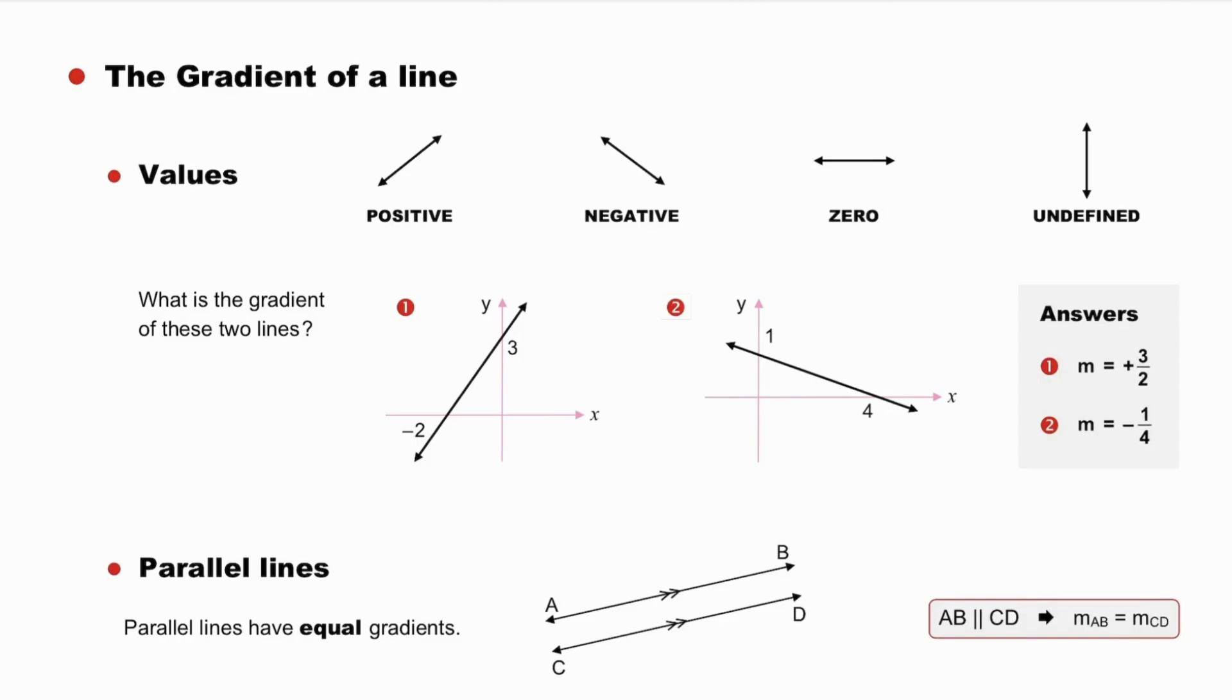Parallel lines. The fact that parallel lines have equal gradients is obvious, but a tool to be remembered. Parallel lines imply equal gradients. But we could also reverse the statement, because it is also true that equal gradients imply parallel lines.